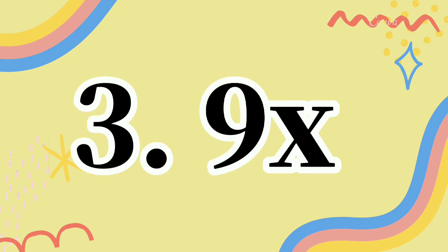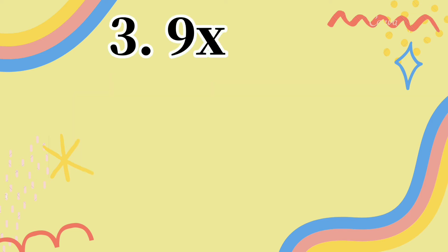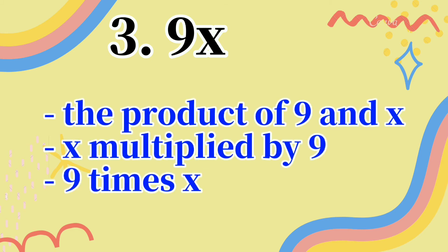Let's have number 3. As you can observe, there is a number and a variable written side by side with no visible symbol between them. When two terms are written adjacently like that, it indicates multiplication. The keywords for multiplication are: product, times, twice, per, multiplied by. So number 3 can be written as: the product of 9 and x, x multiplied by 9, or 9 times x.